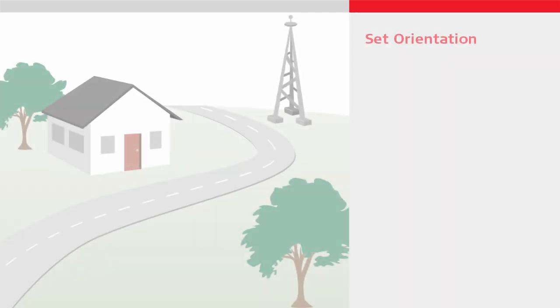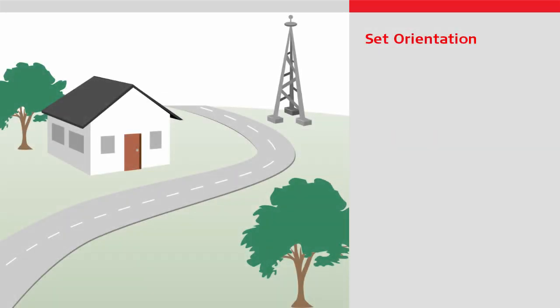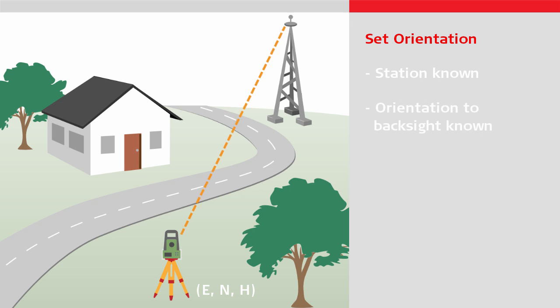The set orientation method can be used in the following cases: if the point over which you will position the total station is known, and if you know the orientation to the backsight point — that is, you know the direction from where the total station will be positioned to the backsight. This could be a church tower, a cross on a mountain top, or any other known point.